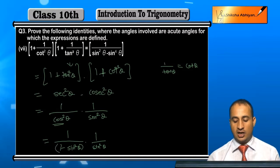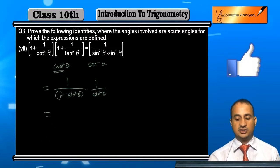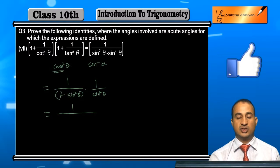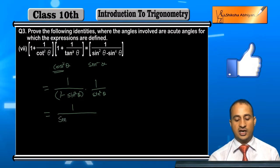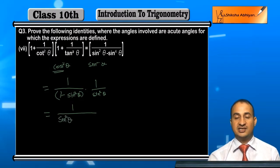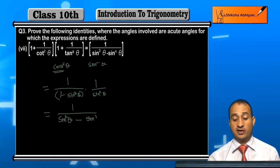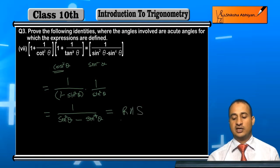When you multiply sin²θ inside the bracket, sin²θ × 1 is sin²θ, and sin²θ × sin²θ gives sin⁴θ. And this is what you needed to prove on the right hand side, student.